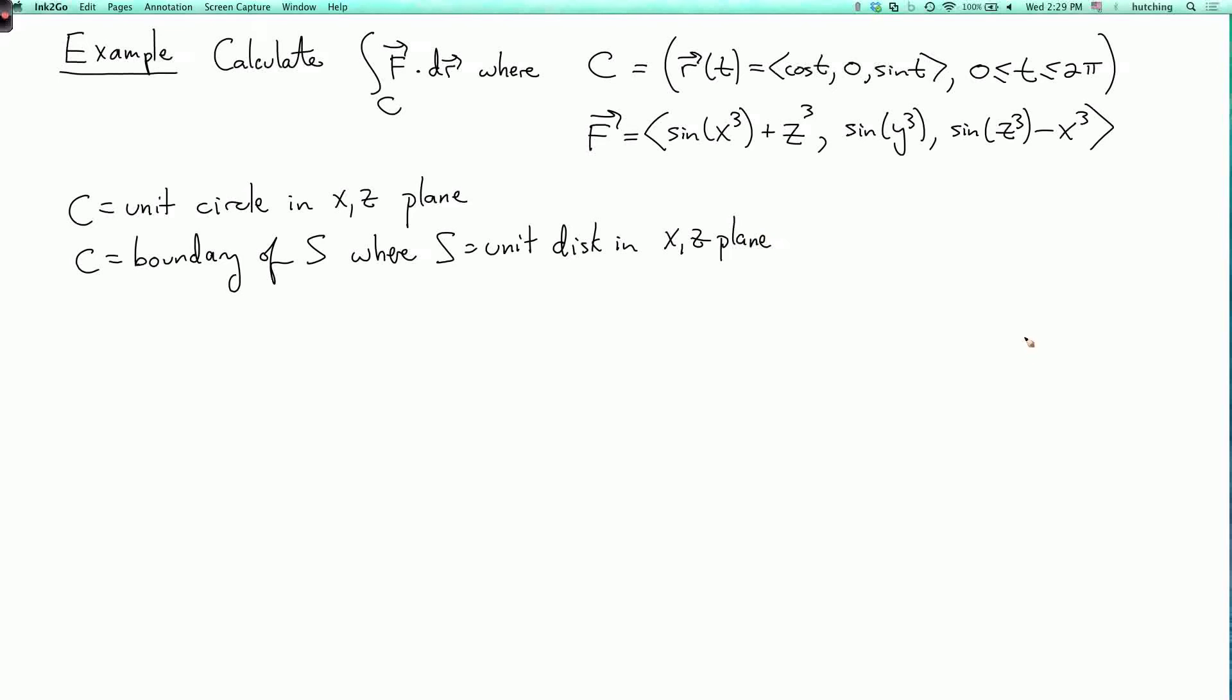Let's draw the picture. Here is the curve c. And which way is it oriented? Well, if we put t = 0, we have the point (1, 0, 0). So this is t = 0. If we increase t a little bit, then the x-coordinate is going down and the z-coordinate is going up. So it's oriented this way.